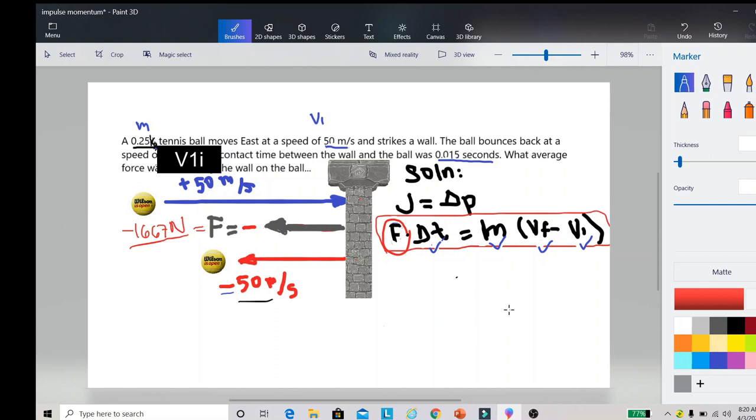Let us try to substitute values. We have here now the force is equal to the mass, which is 0.25. That will be multiplied by the final velocity is negative 50 m/s, the initial velocity is 50 m/s, that is positive. That will be divided by 0.015 seconds.